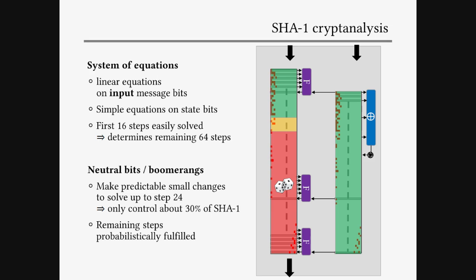We have some speed-up techniques — neutral bits and boomerangs — which make very predictable changes up to step 24, where we can generate new pairs satisfying conditions very cheaply up to step 24. This basically means we only have real control over SHA-1 up to about step 24. The remaining conditions have to be filled probabilistically, so we have to generate many solutions up to step 24 and basically check whether they're satisfied.